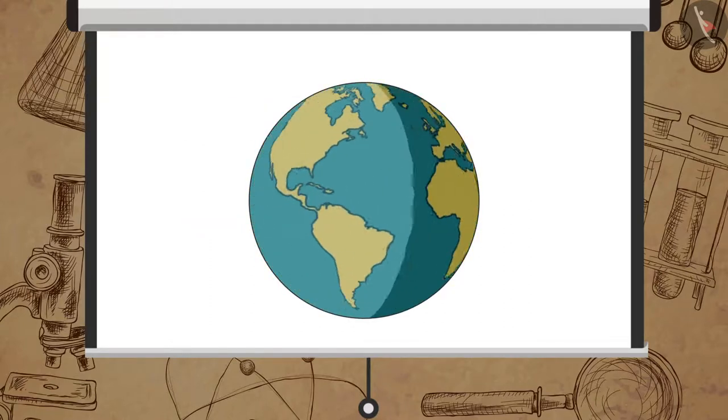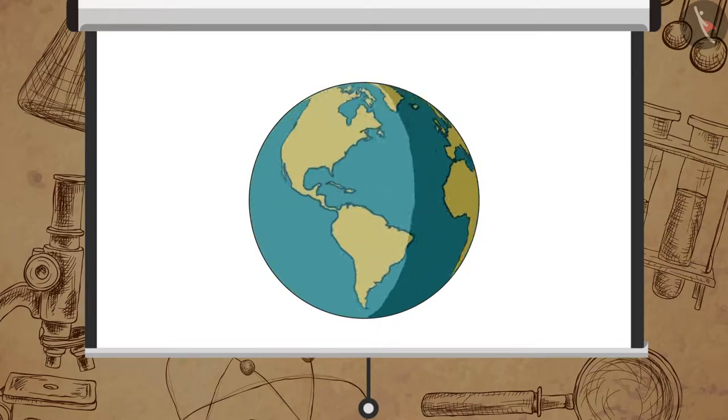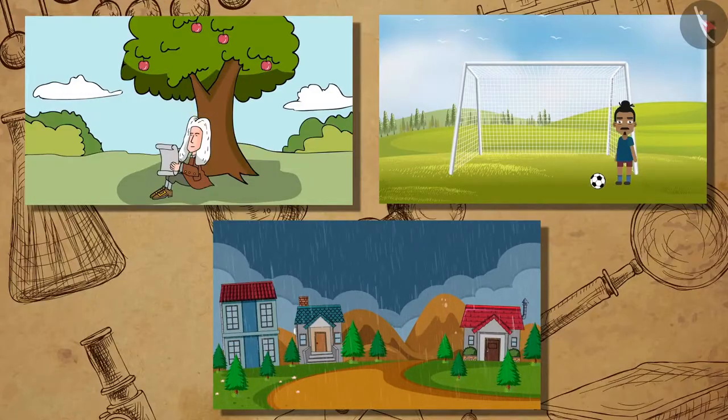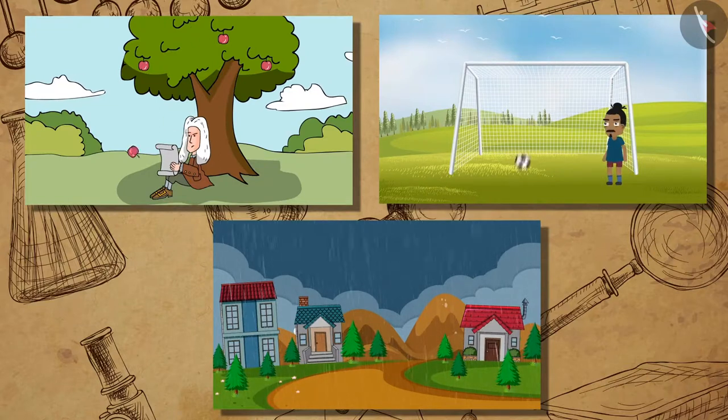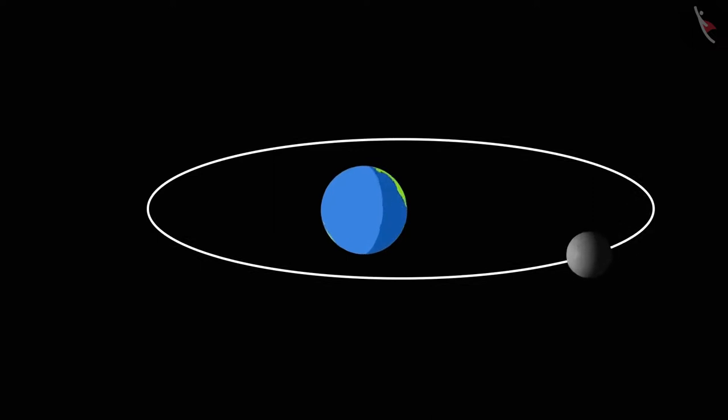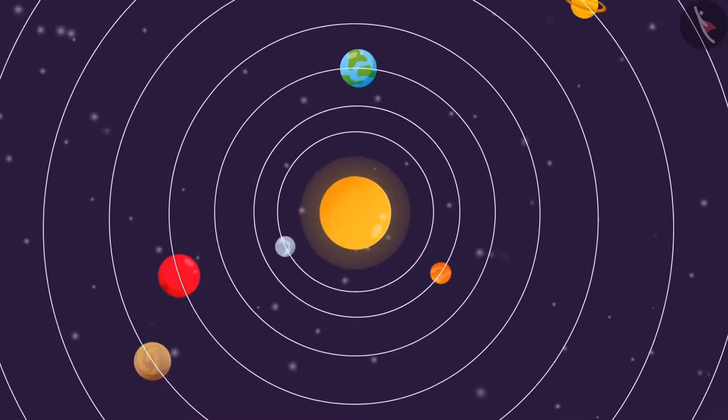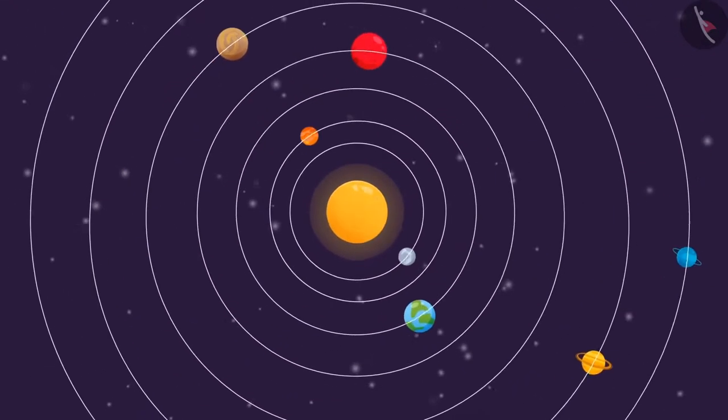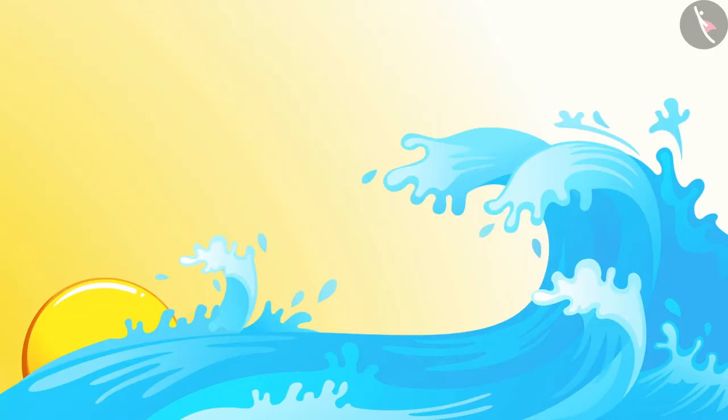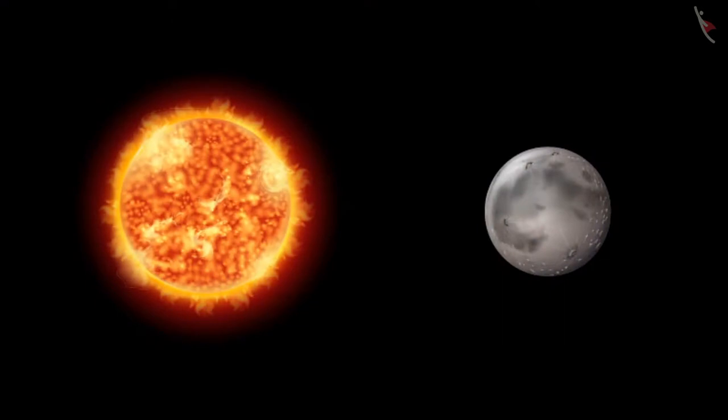Newton's universal law of gravitation explained some very important occurrences on earth. It proved the existence of a force that binds all of us to the earth. It proved how it is possible for the moon to be in motion around the earth, and also how it is possible for the planets to revolve around the sun. It also explained the phenomenon of tides which occur due to the gravitational pull of the moon and the sun.